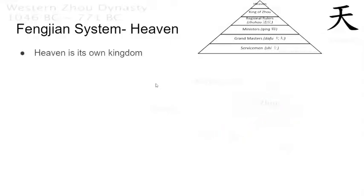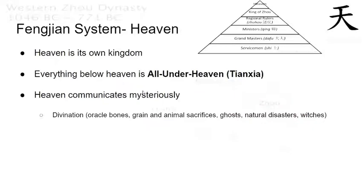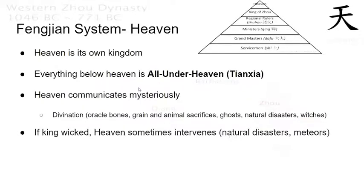Let's talk about Heaven. Heaven is its own kingdom. Unlike, say, a Judeo-Christian conception, Heaven is its own active kingdom. Everything below Heaven is 'all under Heaven,' otherwise known as Tian Xia. Heaven communicates mysteriously — this can be done through divination, such as oracle bones, grain and animal sacrifices. Heaven could also send ghosts, natural disasters, and witches — a gender-neutral term, by the way — could communicate with Heaven as well. If the king was wicked, Heaven would sometimes intervene through natural disasters, meteors, pestilence, and things like that.